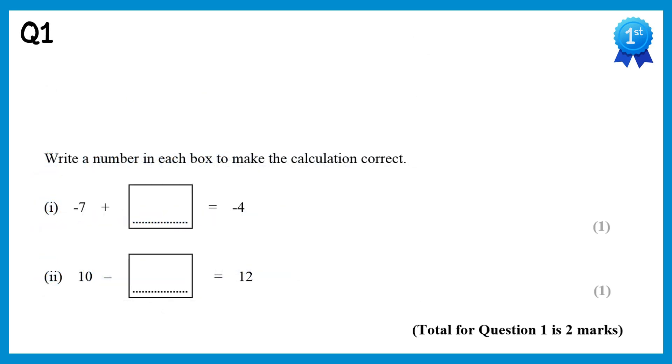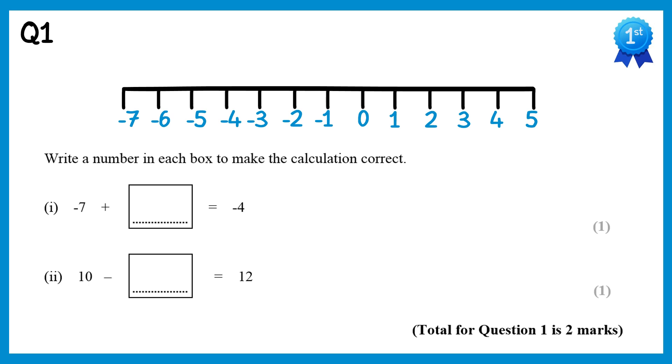For these questions I would draw a number line. For the first one we need to get from negative 7 to negative 4 by adding a number. You can see from the number line we need to move 1, 2, 3 spaces so the number we must add is 3.